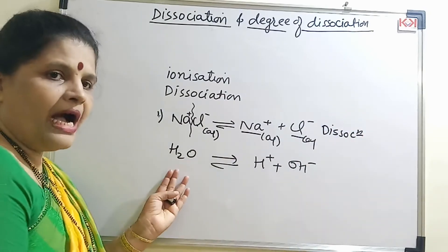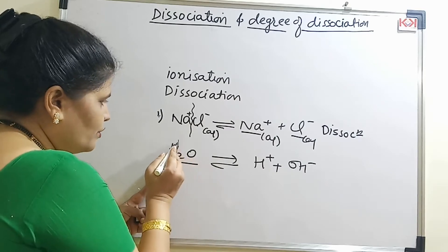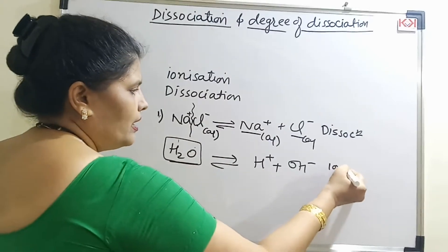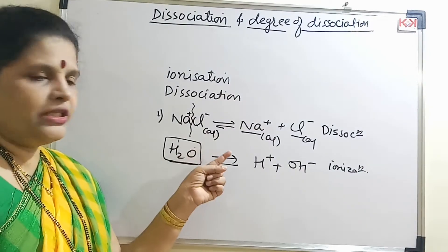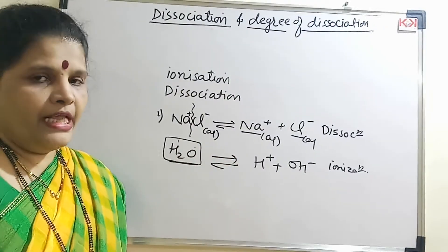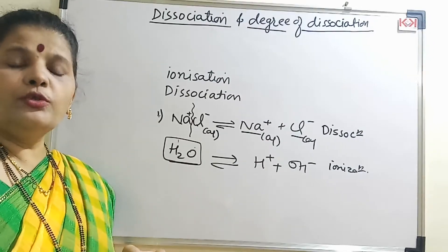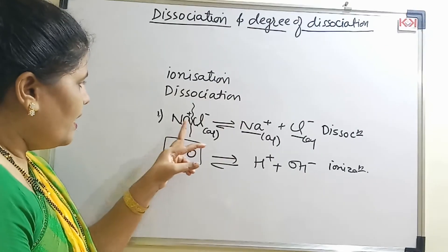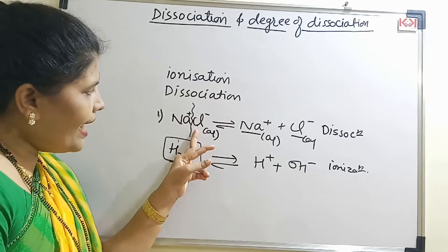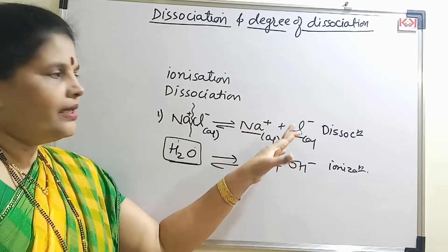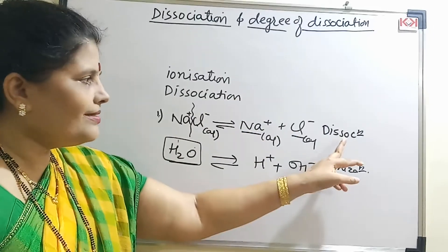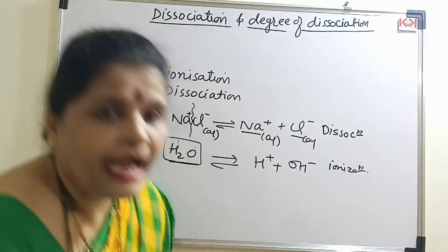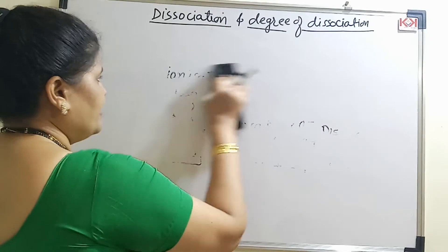When we take water, it forms H+ and OH- ions. Here there is no charge initially — water is a covalent molecule, so I am creating the ions. This process is called ionization. The major difference is: dissociation is used for ionic compounds, whereas ionization is used for covalent compounds.